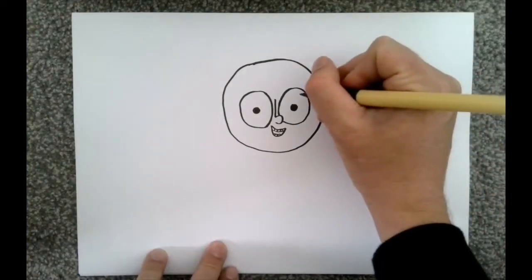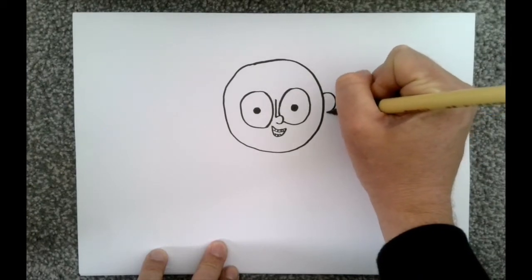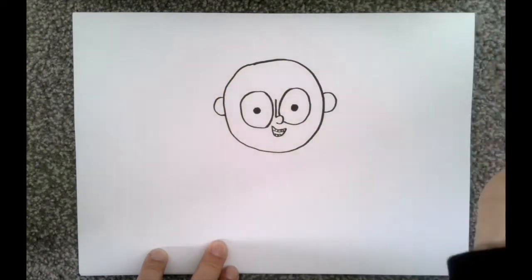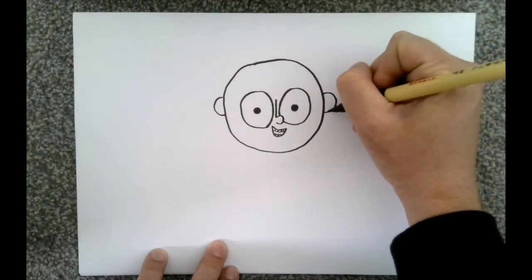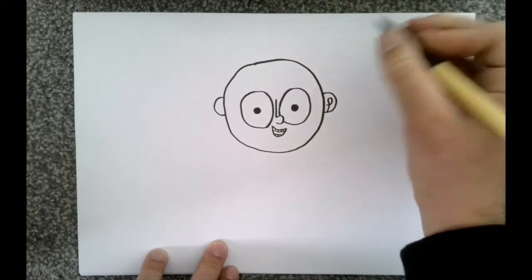Now I'm going to draw some ears on. Either side. And for the ears, you can do any sort of shape really, but I like to do a bit of a swirly shape.